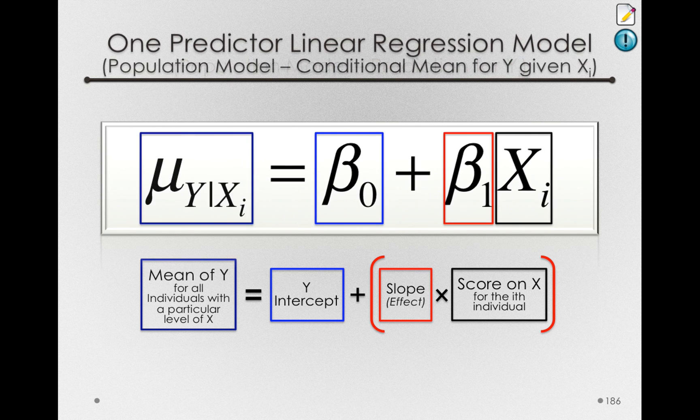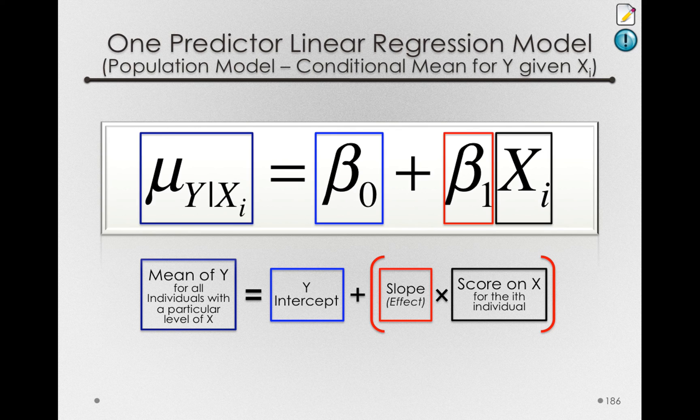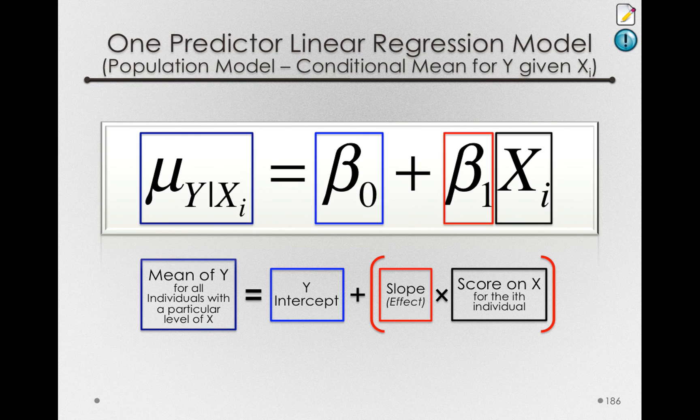Now what this is, is the mean for all individuals at a particular value of x. We write this as mu sub y given xi. And again, this is the mean on y for all individuals at a particular level of x.